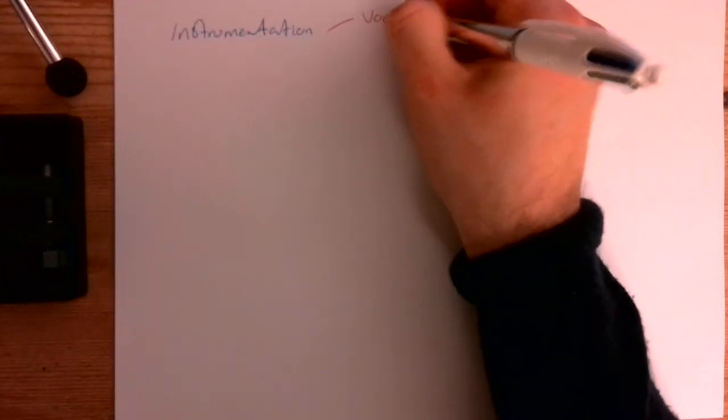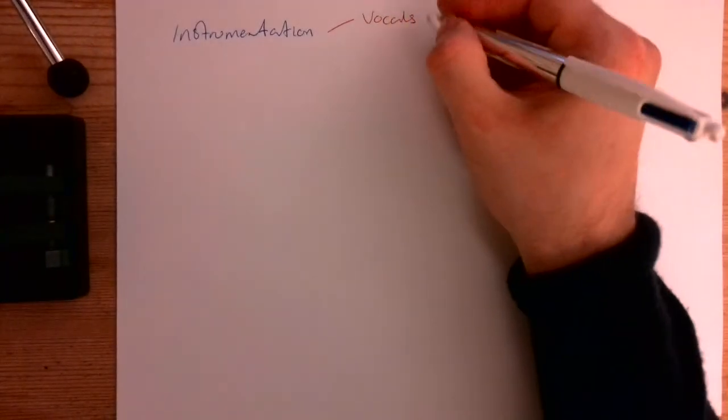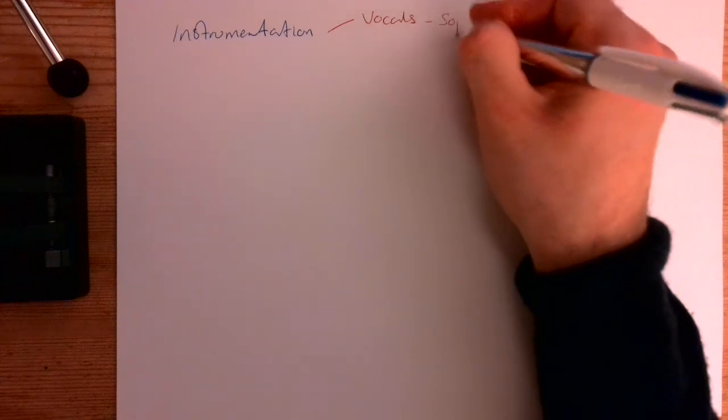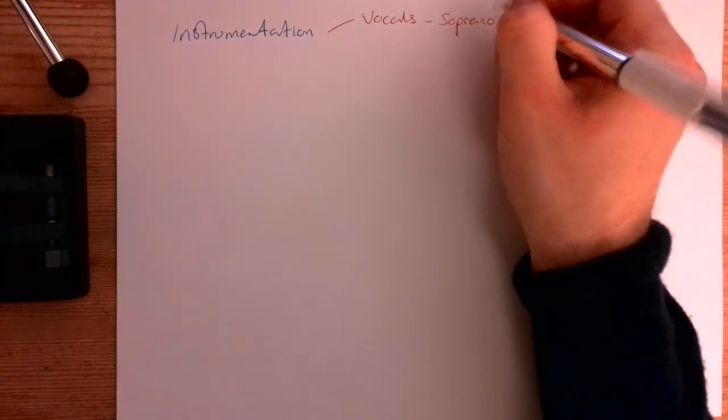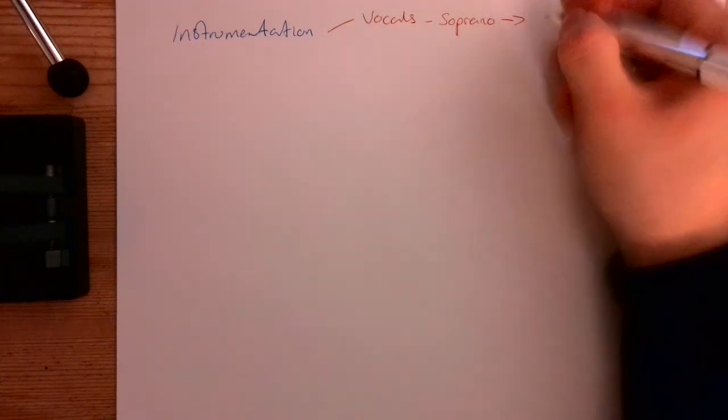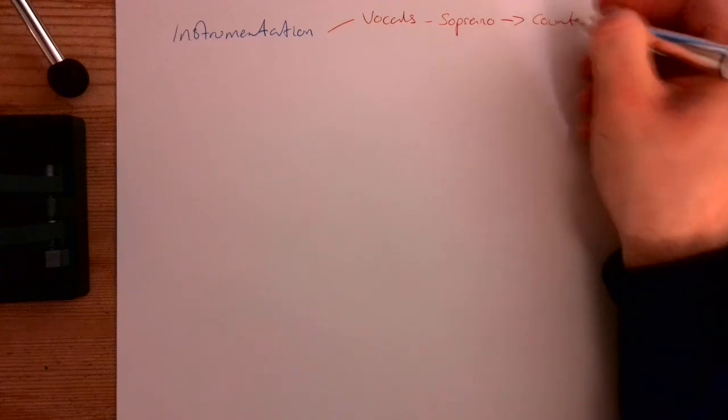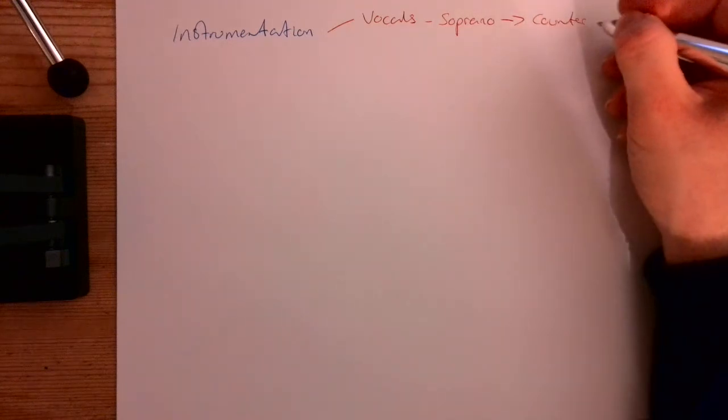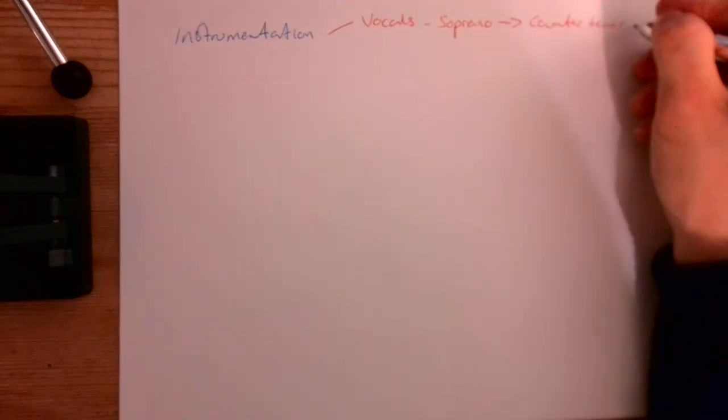Let's start with the vocals. Now the vocals are sung by, in our version, a soprano, but in Purcell's version and in his day, they would have been done by either a counter tenor or a castrati.